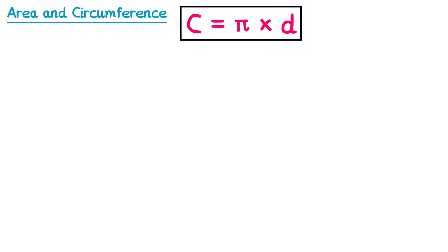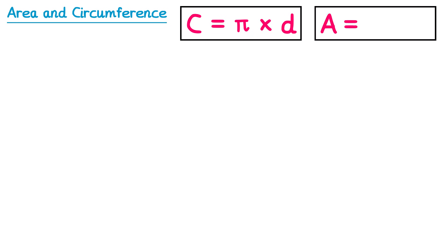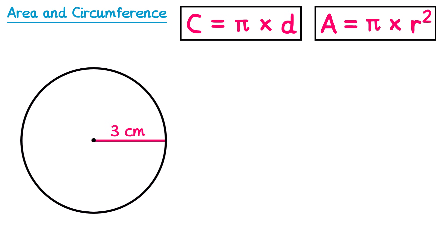We also need to be able to work out the area of a circle, and there's a formula for this too: the area is equal to pi multiplied by the radius squared. Notice the difference between the two formulas — the area one has the radius rather than the diameter, and it also has a squared on it.